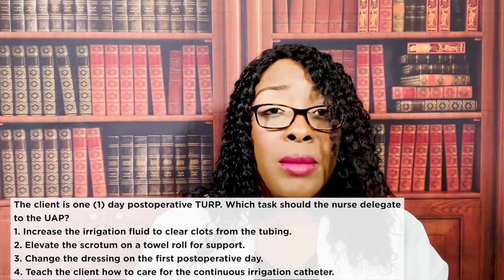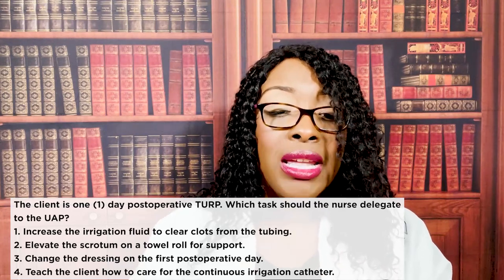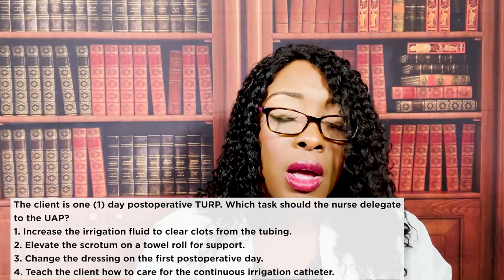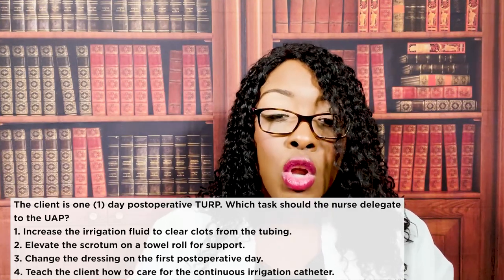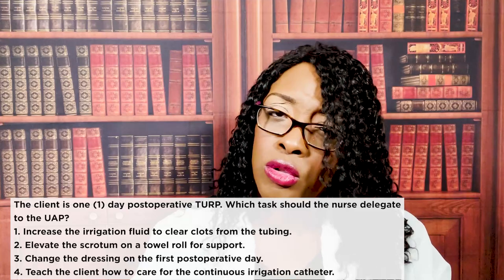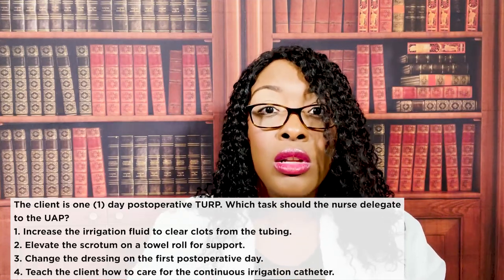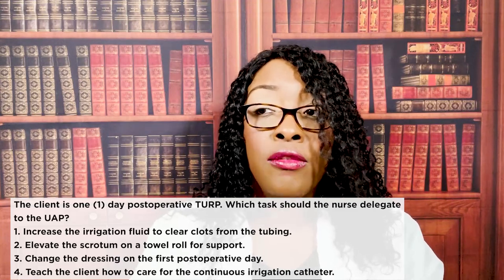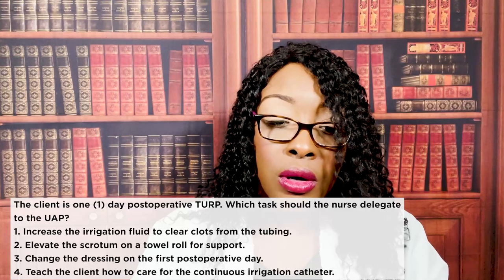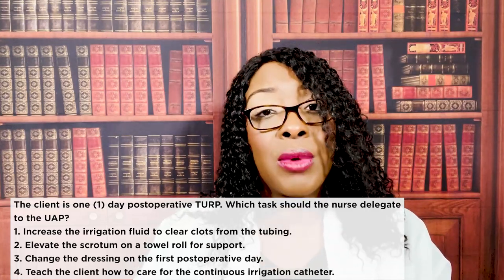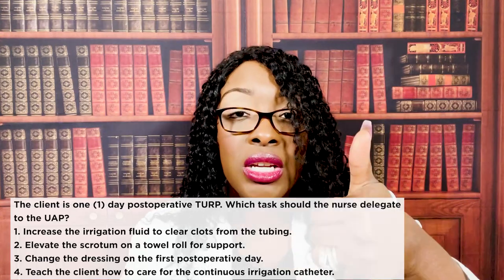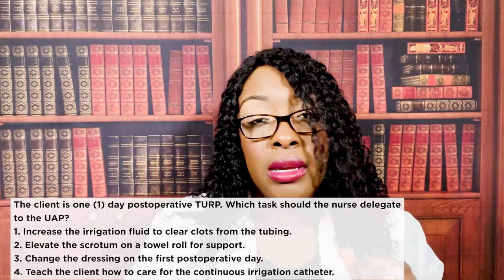The correct answer is two — elevate the scrotum on a towel roll for support; that's the only thing the UAP can do. Choice one — increasing irrigation fluid to clear clots — requires nursing assessment and clinical judgment. Choice three — changing the dressing on the first post-op day — is actually done by the surgeon, who wants to assess the wound and give orders. Choice four — teaching — the UAP cannot teach. The registered nurse cannot delegate teaching, evaluating, or assessing; the RN must keep those tasks.